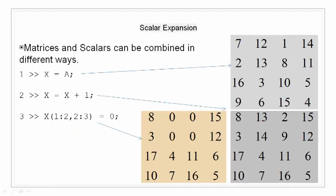Scalar expansion: Matrices and scalars can be combined in several different ways. For example, a scalar is added to a matrix by adding it to each element. When we write X+1, we are basically adding 1 to each and every element of matrix X. With scalar expansion, MATLAB assigns a specified scalar to all indices in a range. In line 3, we are going to replace certain portions of matrix X with 0. We write X(1:2,2:3) = 0, so elements in 1st row 2nd column, 1st row 3rd column, 2nd row 2nd column, and 2nd row 3rd column are replaced with 0.